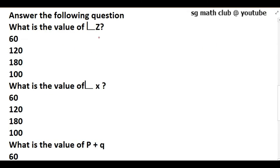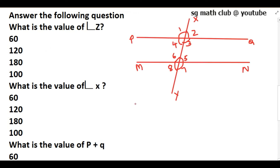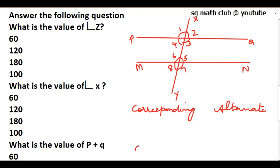The first question is: what is the value of angle z? Whenever two lines are cut by a transversal we have corresponding angles — the angles formed are corresponding angles. We also have alternate interior angles. PQ and MN are two parallel lines and XY is the transversal. Corresponding angles are angle 2 and angle 5, their measurements will be equal.